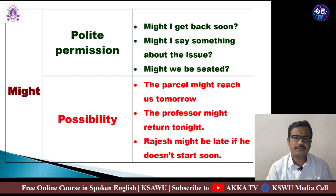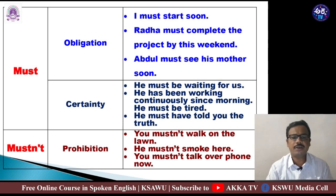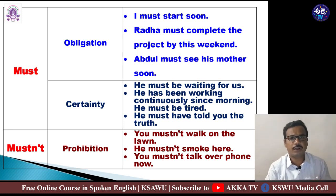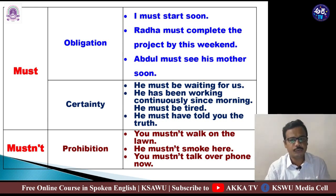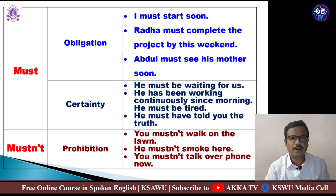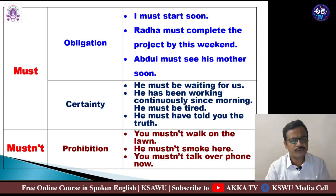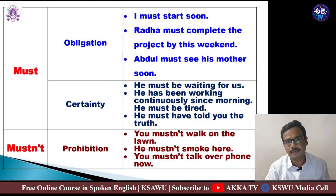The next modal auxiliary is 'must'. 'Must' is mainly used for obligation. 'I must start soon' — he is putting an obligation on himself, meaning he must start or else he will be left behind. 'Radha must complete the project by this weekend' — it is compulsory or mandatory for Radha. 'Abdul must see his mother soon' — she is ailing and has expressed a desire to see her son, so it is an obligation.